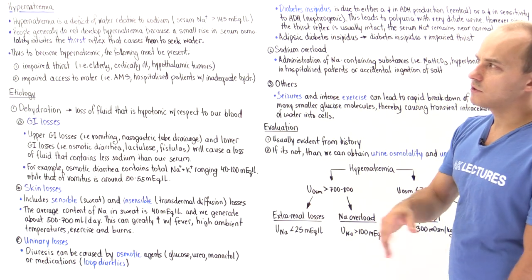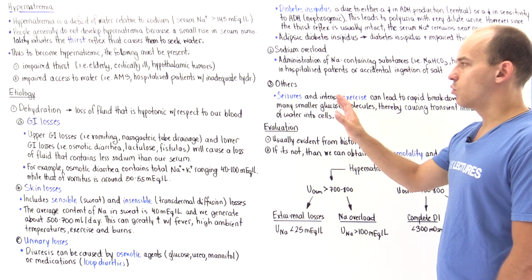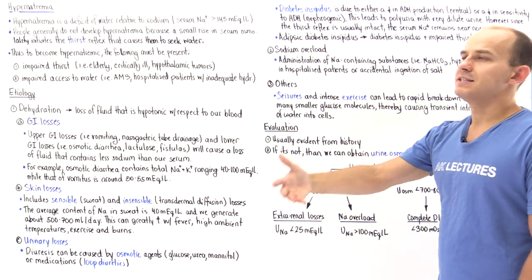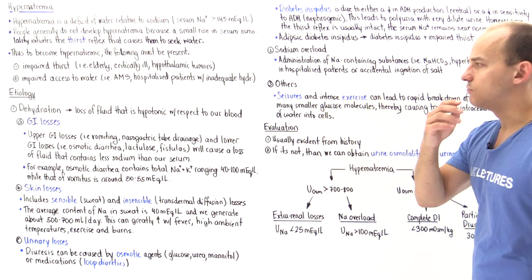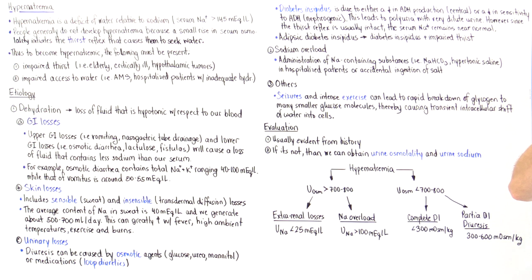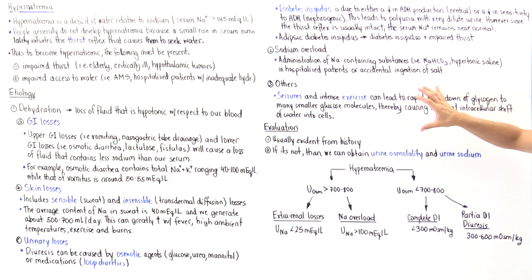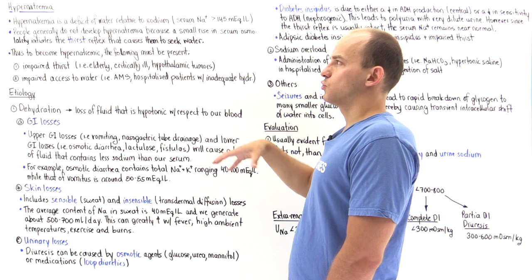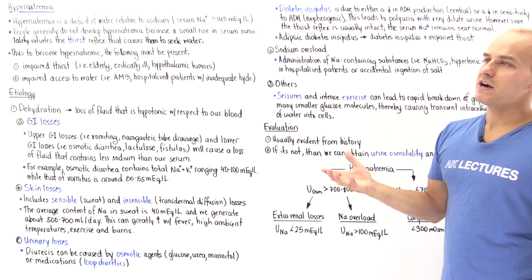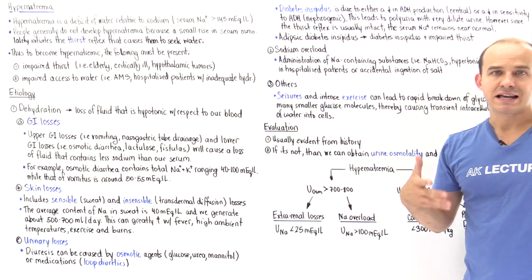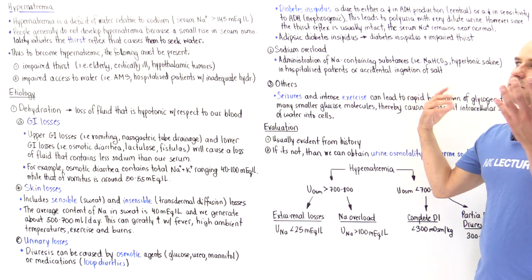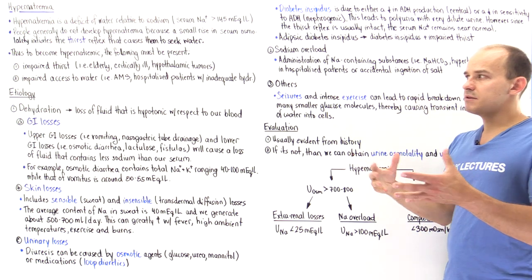Generally, if we stop exercising or the seizure stops in about 10 to 15 minutes, the sodium levels should equilibrate within our blood — so this is just a transient cause. How do we evaluate for the cause of hypernatremia? Usually the cause is evident on exam: if we take a good history, we can determine the cause.